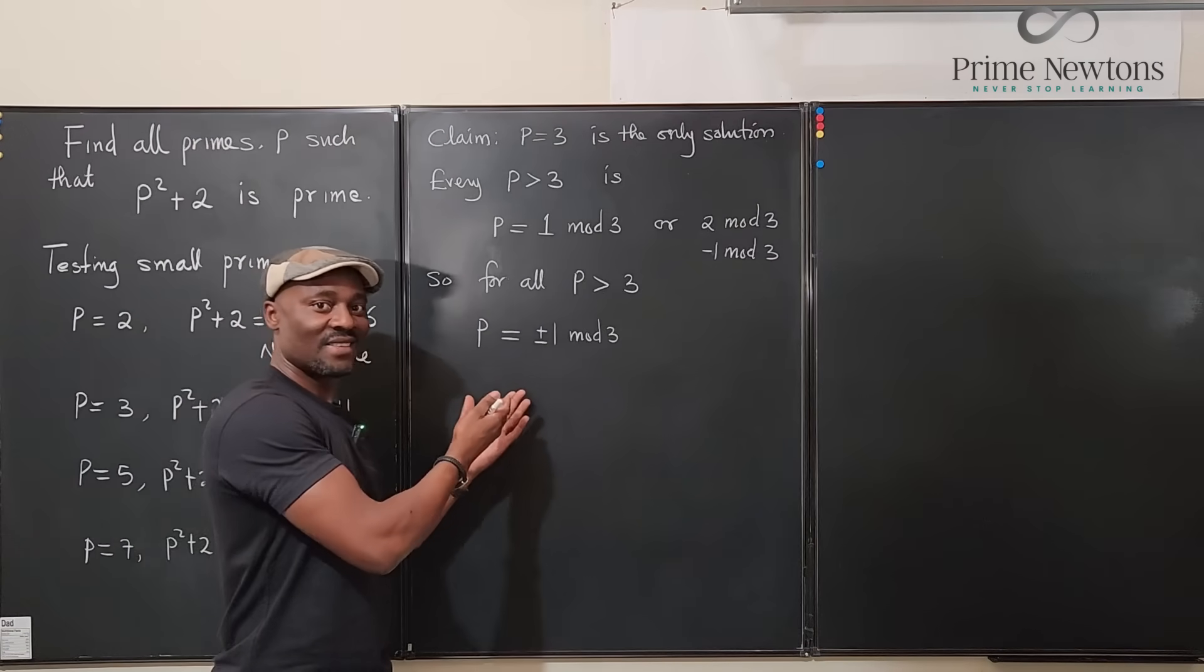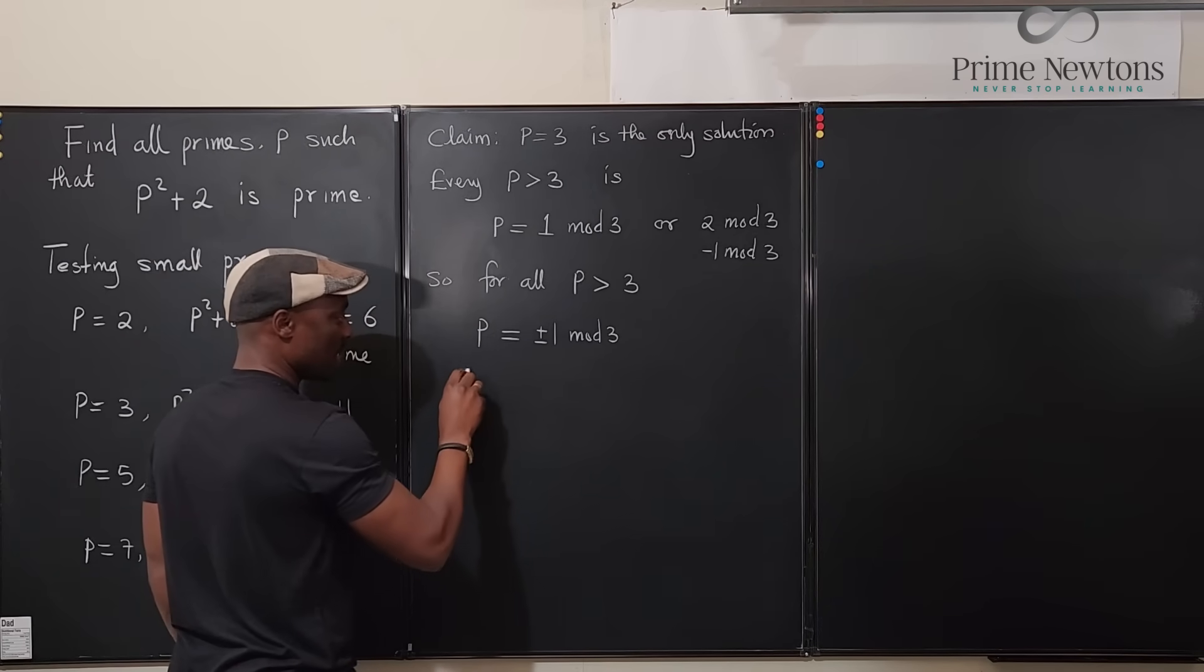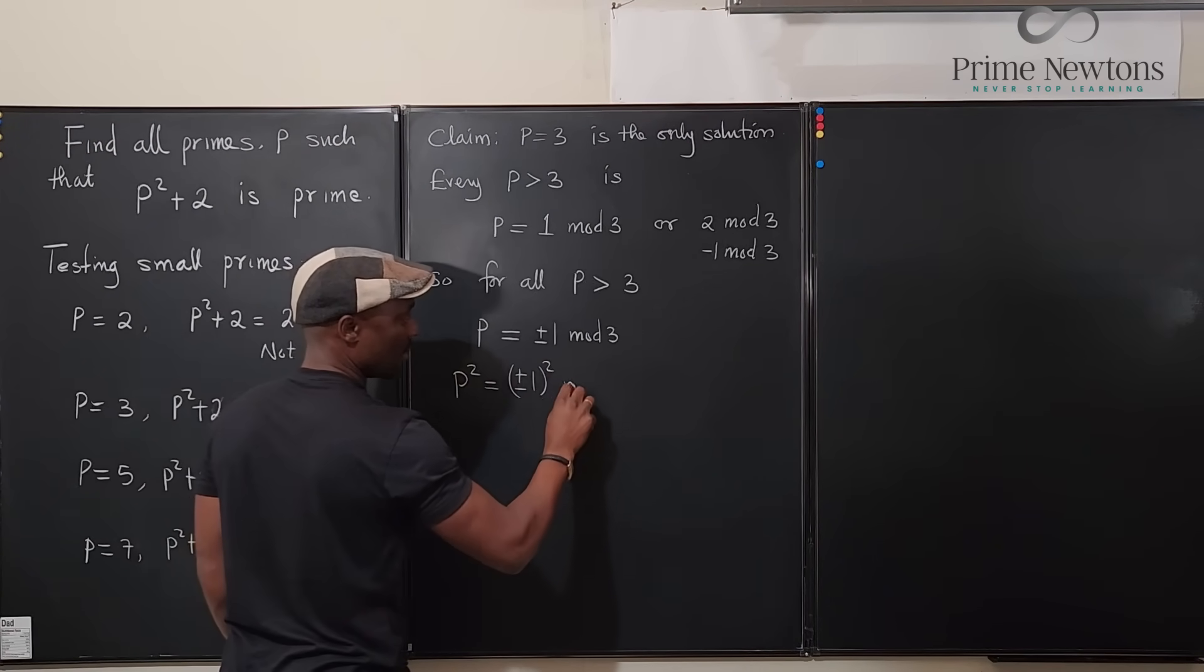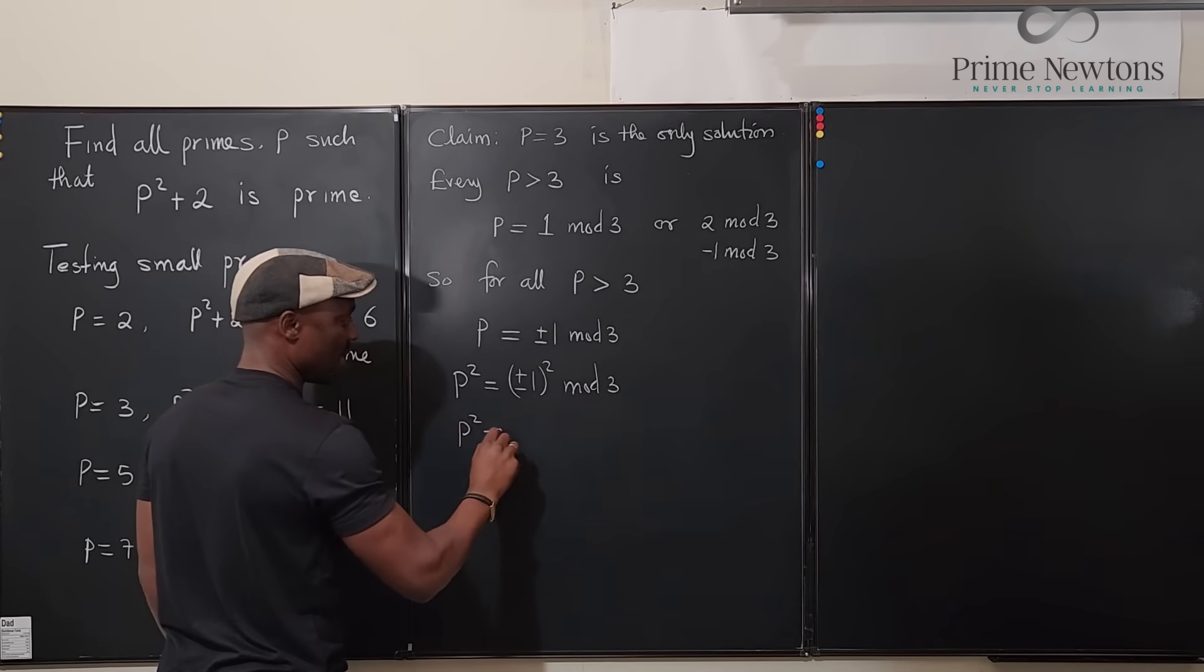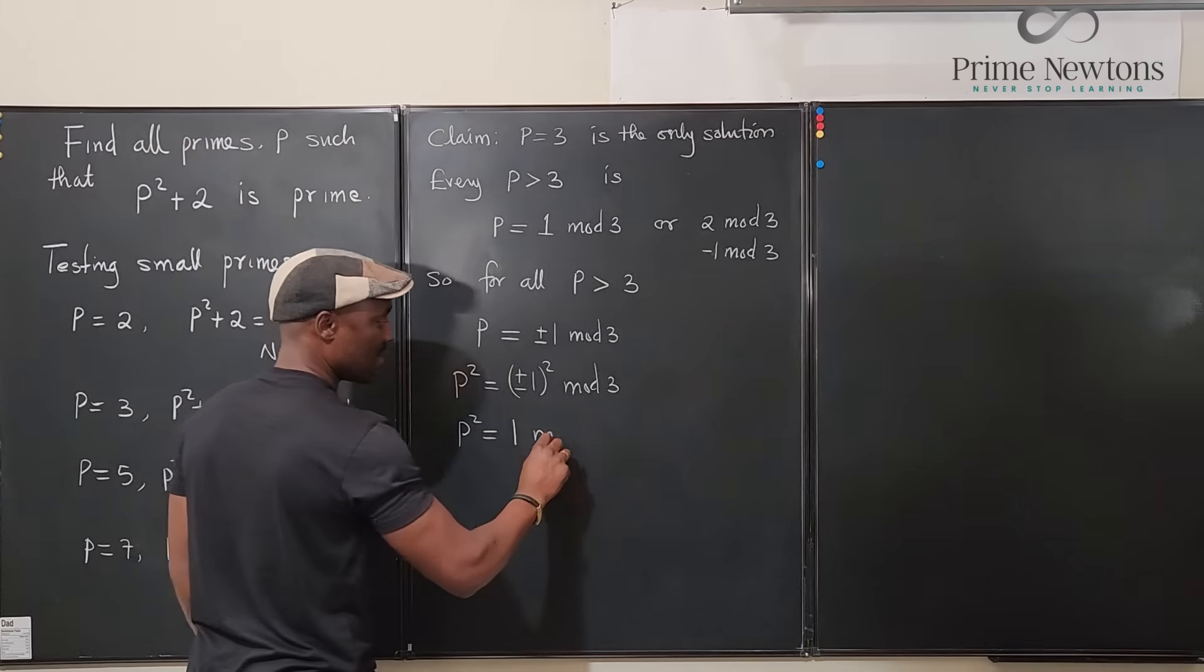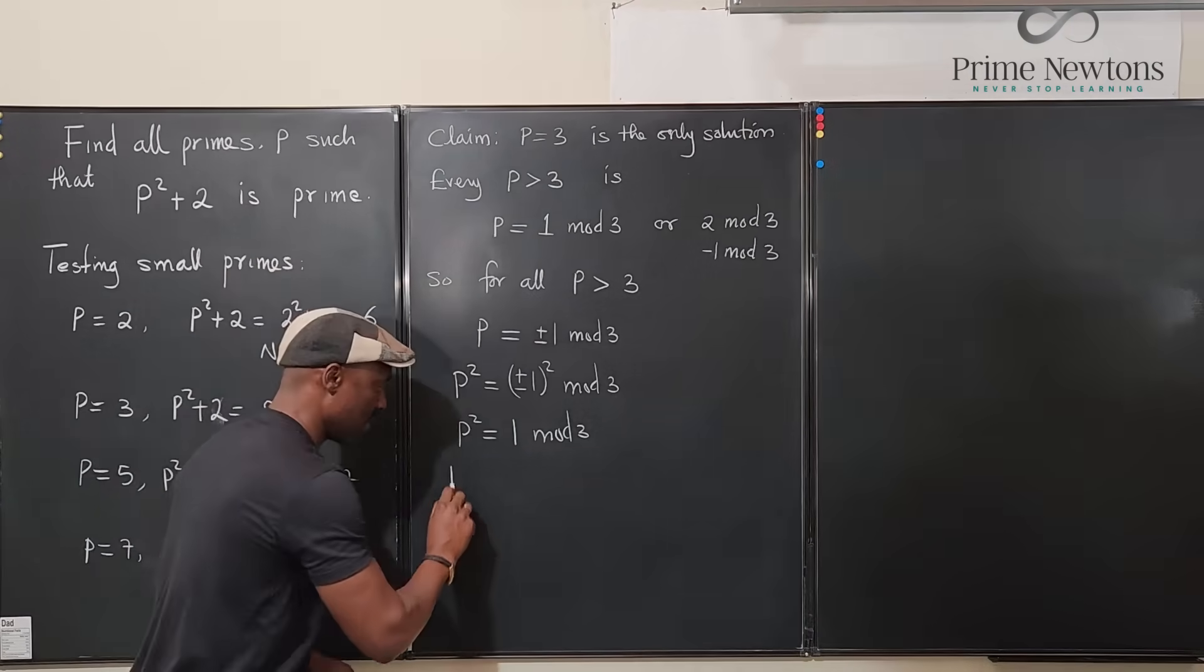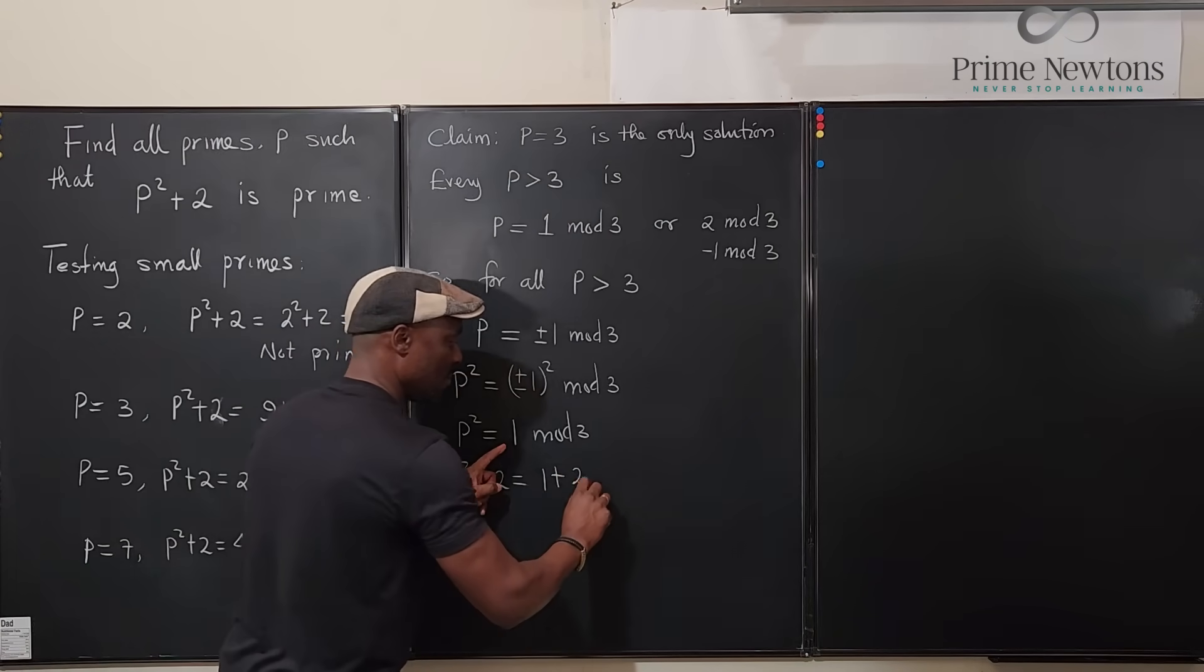Okay, so watch this. If we square p, p squared will be plus or minus 1 squared, and that means p squared equals 1 mod 3.